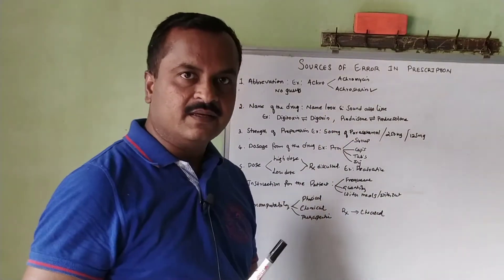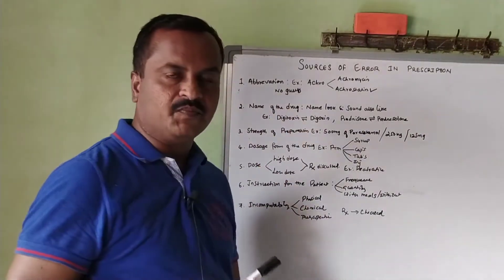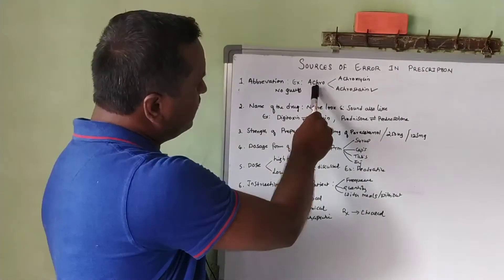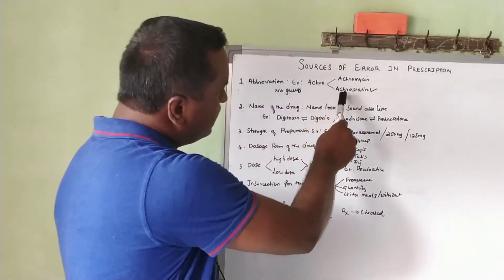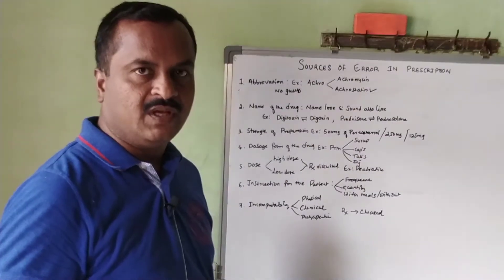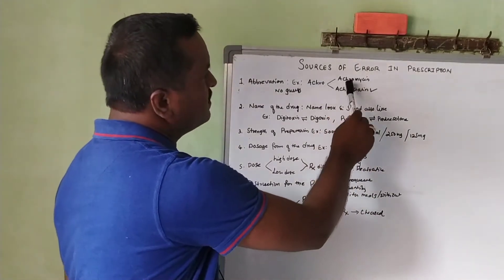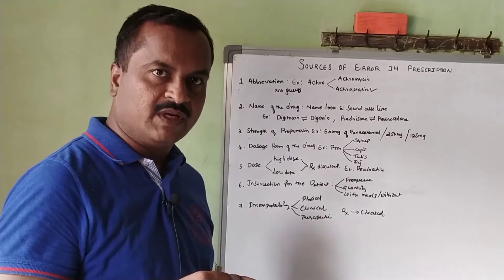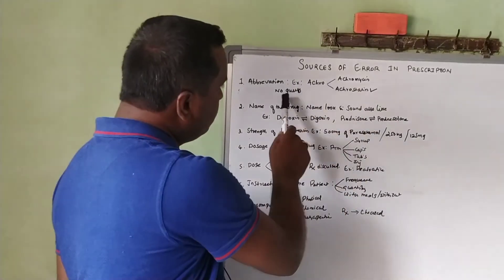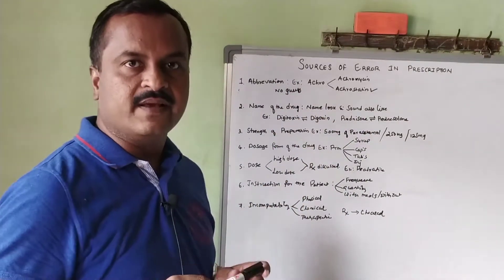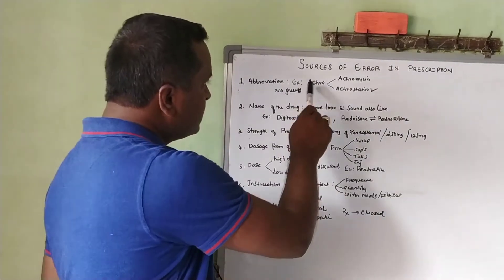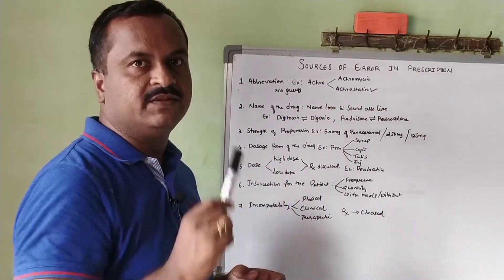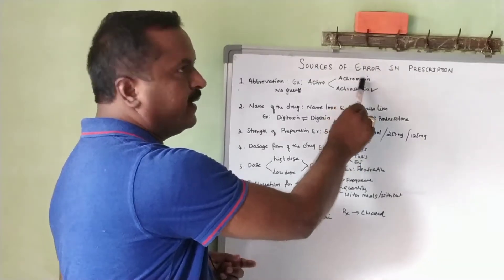The first common error is abbreviation. For example, a physician writes 'acro' in the prescription, intending acrostatin to be used. But the pharmacist may think that 'acro' means acromycin and formulate the wrong dosage form. The pharmacist should never guess an ingredient when an abbreviation appears. Always communicate with the physician to confirm whether the prescription contains acrostatin or acromycin.